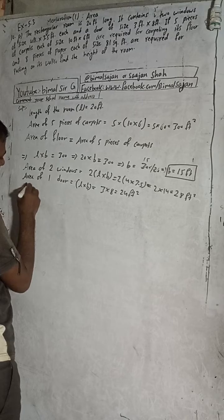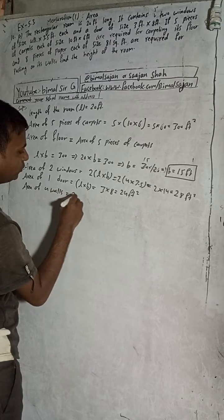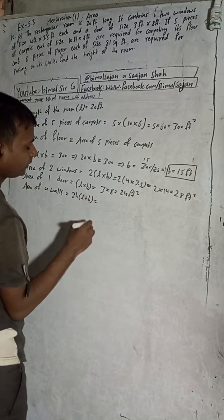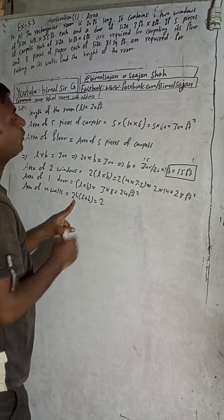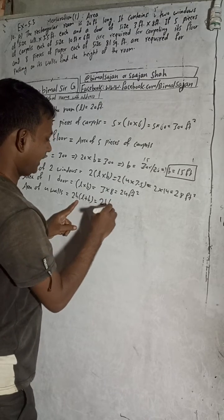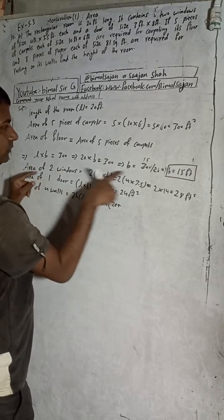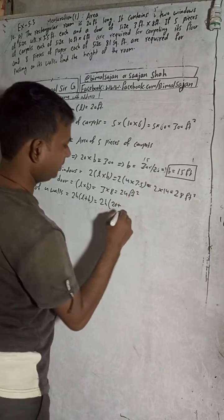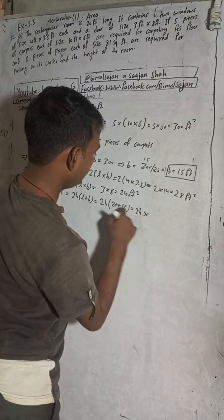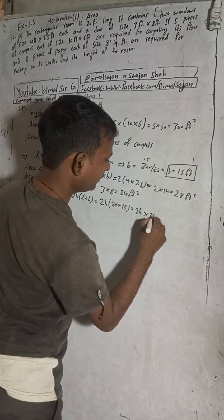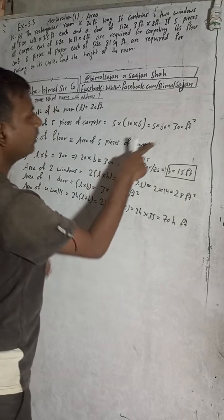Now the area of four walls. The formula for area of four walls is 2 × h × (L + B). We don't know the height h yet — that's what we need to find. The length of the room is 20 feet and the breadth is 15 feet, so L + B equals 35. Therefore area of four walls equals 2 × h × 35, which gives 70h square feet.